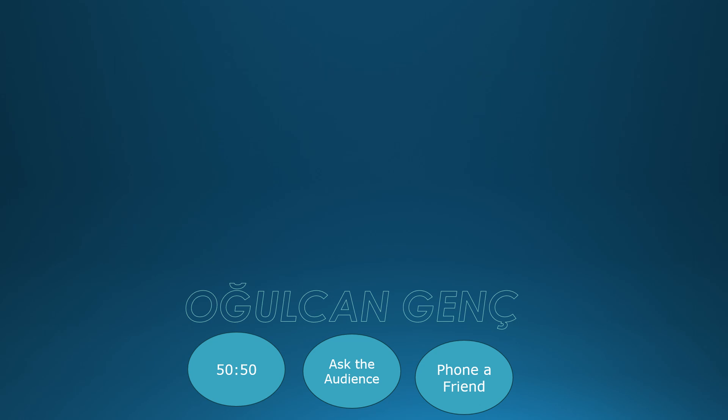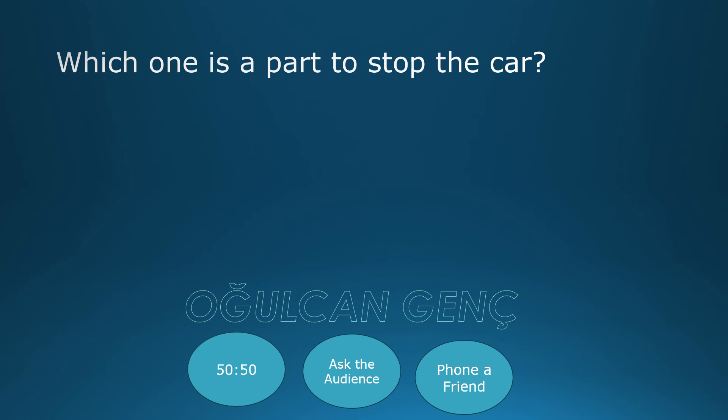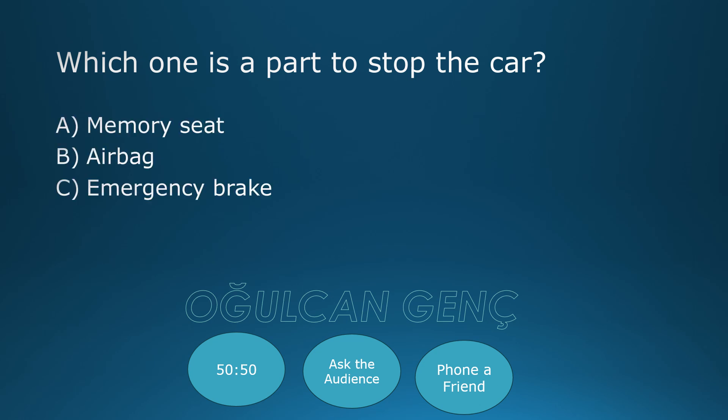Which one is a part used to stop the car? Options: Memory, Seat, Airbag, Emergency Brake, Ignition. Final answer: option D. Correct answer is Emergency Brake.